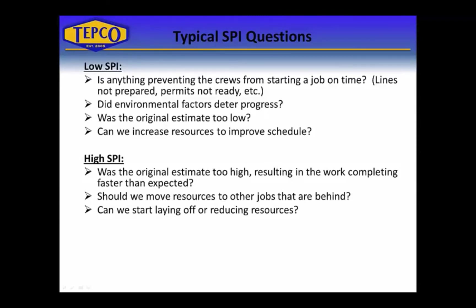Now if the SPI is high, you might want to ask was the original estimate too high, meaning the work completed faster than expected. People need to be careful with that because if the original estimate was too high, it's possible that other work could have been performed that was maybe removed from the schedule to keep the entire project or turnaround plan under a specific budget. Another thing to ask is should we move resources to other jobs that are behind? For example, in a downstream refinery turnaround, you might have a high SPI on your piping jobs but a low SPI on your valve replacement jobs. Can you take some of those piping resources and move them over to valves? That would slow the piping down, and you would only do that provided the piping jobs were not going to turn critical.